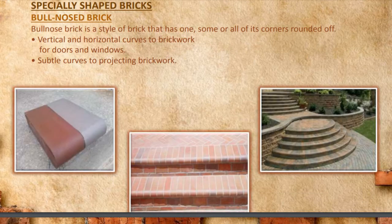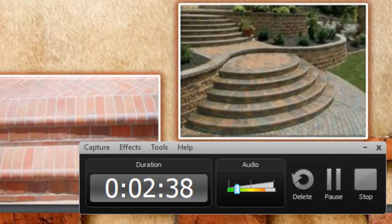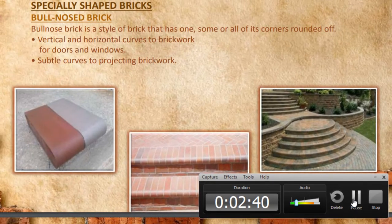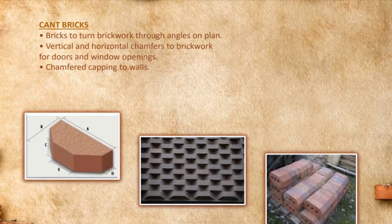Other types of bricks are the especially shaped bricks. First, bull nosed bricks — a style of brick that has one, some, or all of its corners rounded off, with vertical and horizontal curves used in brickwork for doors and windows and projecting brickwork.